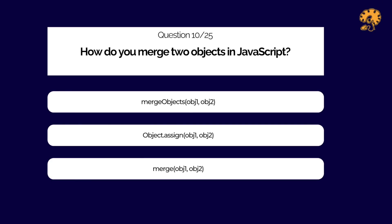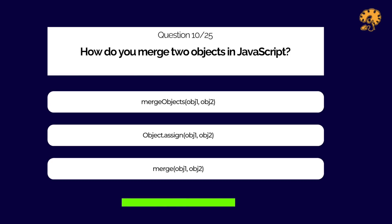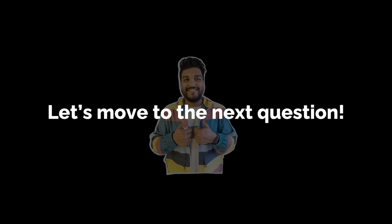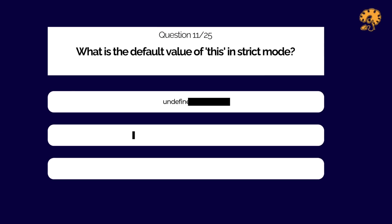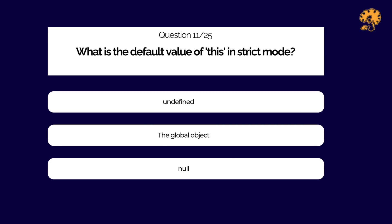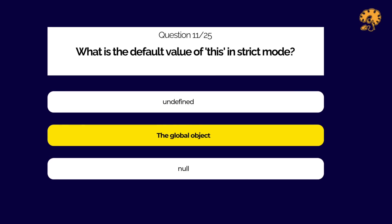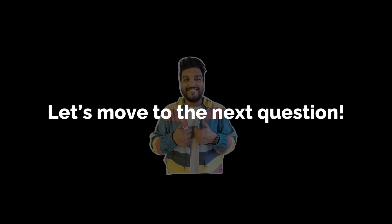How do you merge two objects in JavaScript? What is the default value of 'this' in strict mode?